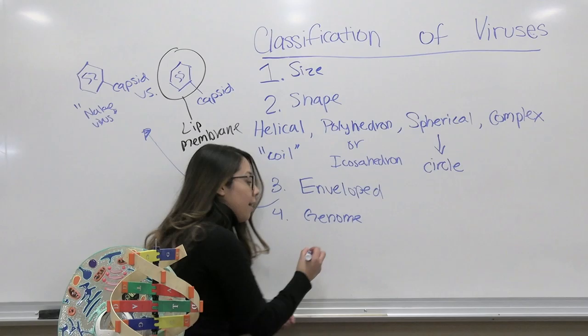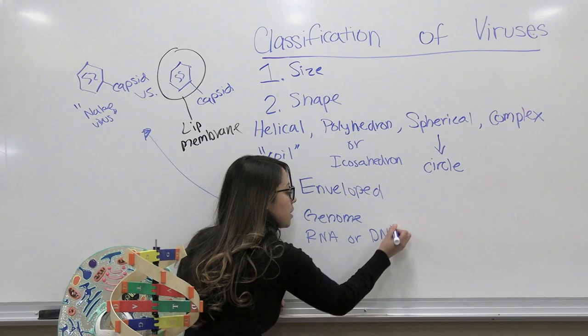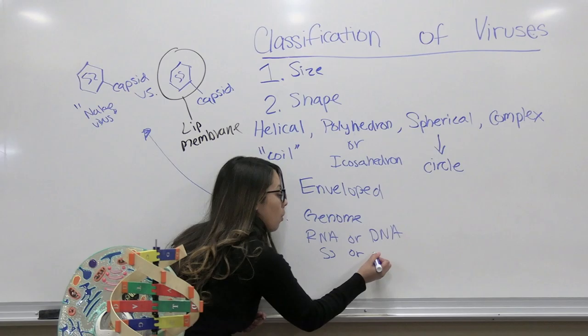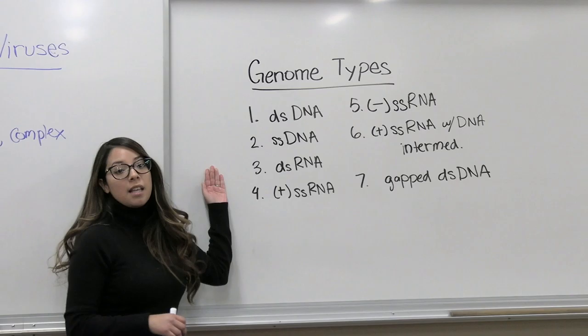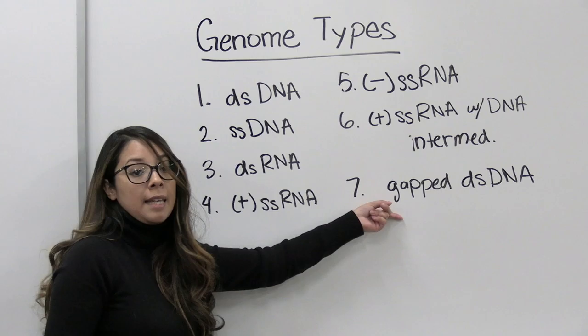The fourth way we classify a virus is by genome. Does it have RNA or DNA? Is it single-stranded or double-stranded? There are actually seven different genome types a virus can have — for example, double-stranded DNA or gapped double-stranded DNA.